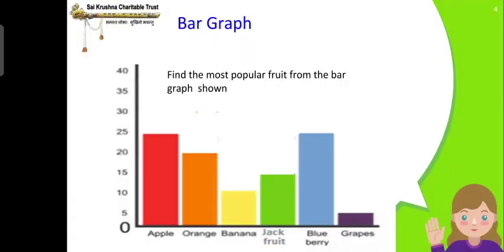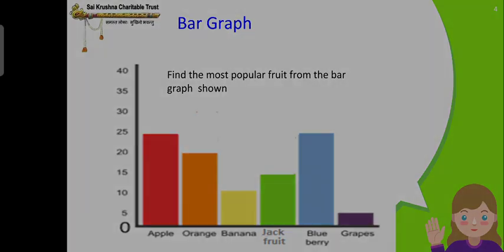Bar graph. Can you just look at here? In the x-axis, it is apple, orange, banana, jackfruit, blueberry and grapes - they are fruits. And in the y-axis, there are few numbers: 0, 10, 15, 20, 25, 30, 35, 40. Find the most popular fruit from the bar graph shown. It is very easy to identify the most popular fruit. You just think that these numbers are the number of people who are liking it. You can look at the diagram and say easily.